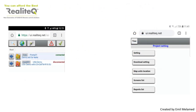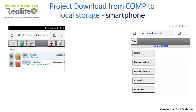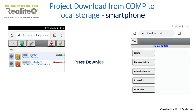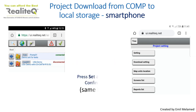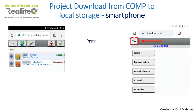To download the project to your smartphone, press the Project Settings icon. Then press Download Settings. Press Set All, Apply, and OK — exactly as on your PC. Press Tree to return.